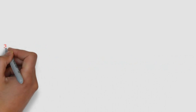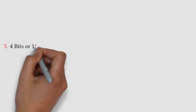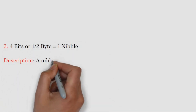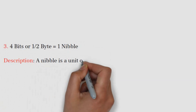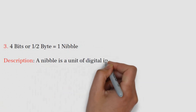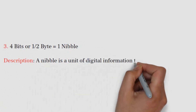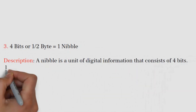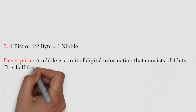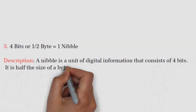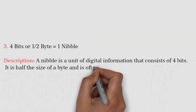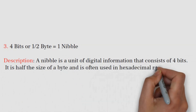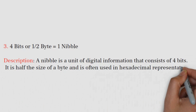Number 3: 4 bits, or 1 half byte, equals 1 nibble. A nibble is a unit of digital information that consists of 4 bits. It is half the size of a byte and is often used in hexadecimal representation.